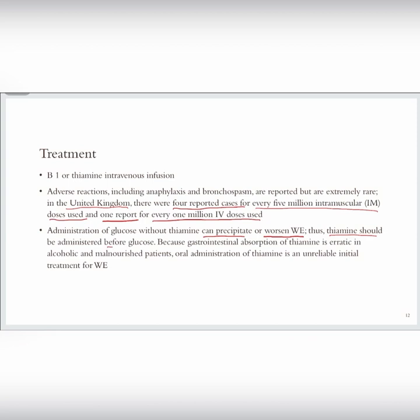We need to be aware that administration of glucose without thiamine can precipitate or worsen Wernicke encephalopathy, so thiamine should be administered before glucose. Another thing to be aware of is that oral administration may be available but could be unreliable in initial treatment because gastrointestinal absorption of thiamine is erratic in alcoholic and malnourished patients, so we need to give thiamine through IV infusion initially.